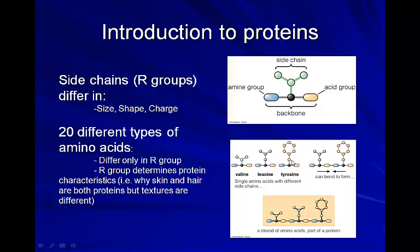The R group — or side chain — is what gives each amino acid its unique characteristics. Different R groups have different characteristics: some have rings, some have a charge, some contain phosphorus, and some contain sulfur. Depending on the type of protein you're making, that dictates what types of amino acids go into that protein and in what order.